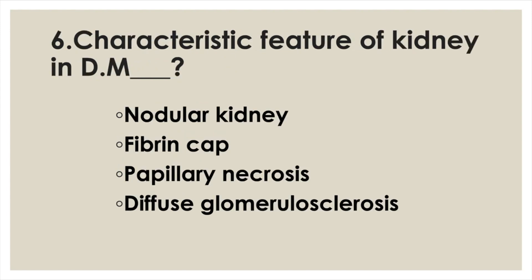Characteristic feature of the kidney in diabetes mellitus: Option A: Nodular kidney. Option B: Fibrin cap. Option C: Papillary necrosis. Option D: Diffuse glomerulosclerosis. Answer: Option D, Diffuse glomerulosclerosis.